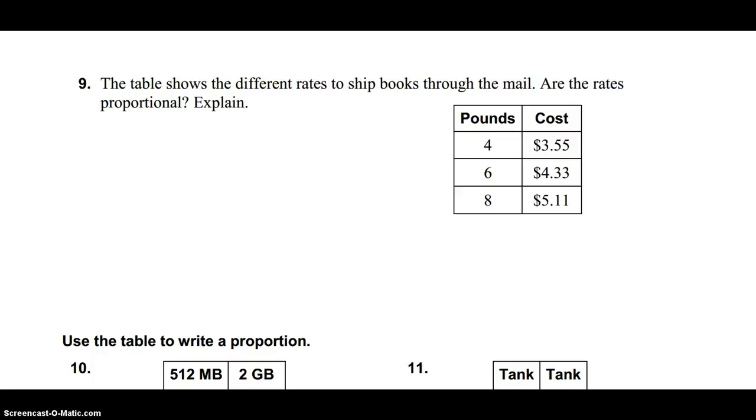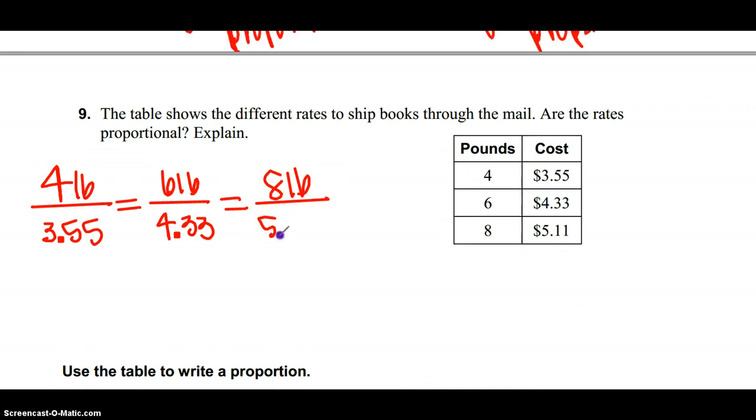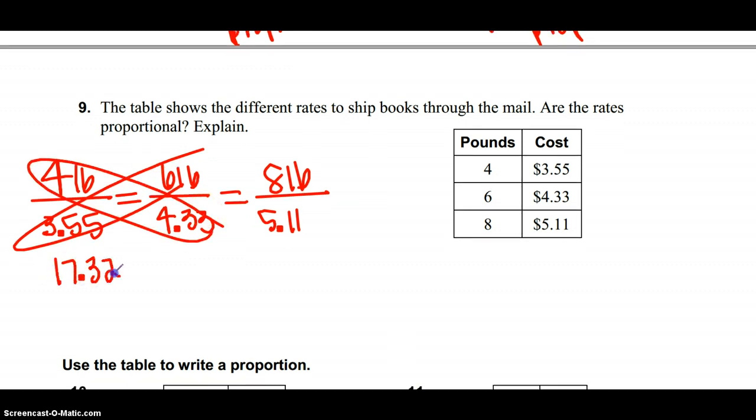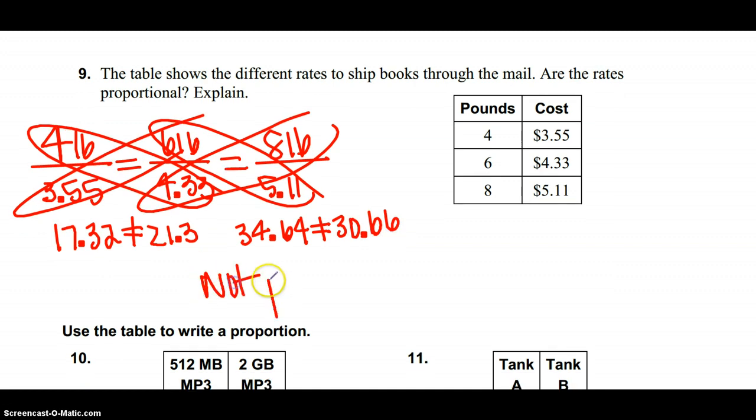Number 9 says the table shows different rates to ship books through the mail, are the rates proportional. So for 4 pounds it costs 3.55, for 6 pounds it costs 4.33, and for 8 pounds it costs 5.11. So you just need to set up all three of these. So 4 pounds is 3.55, is that proportional to 6 pounds for 4.33, and 8 pounds, 5.11. We're just going to do some cross products here. So 6 times 3.55 and 4 times 4.33, so we have 17.32 and 21.3. Right away we know that those proportions are not equal, but we do need to check all of them just to make sure. So I'm going to do these two and I have 34.64 is not equal to 30.66. So you would say this is not proportional.